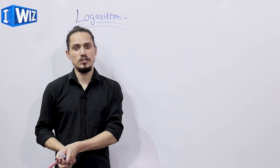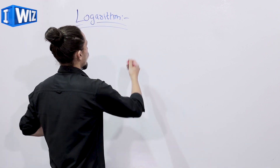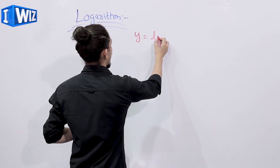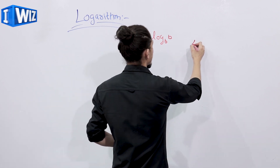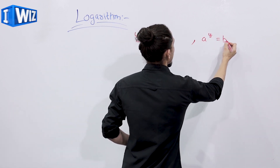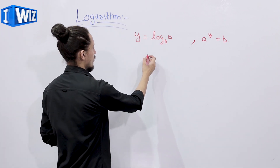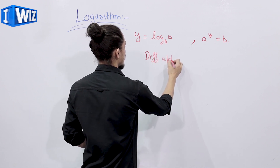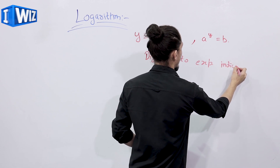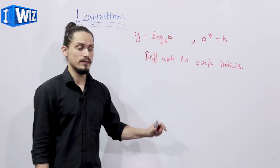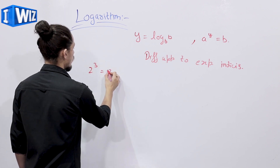The next topic is differentiation of logarithmic function. What is a logarithmic function? A function of the form y = log to the base a of b is called a logarithmic function if a raised to power y equals b. In simple words, a logarithmic function implies a different approach to exponential or indices. For example, 2 raised to power 3 equals 8.